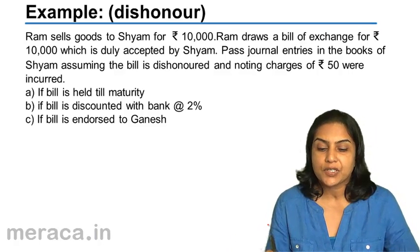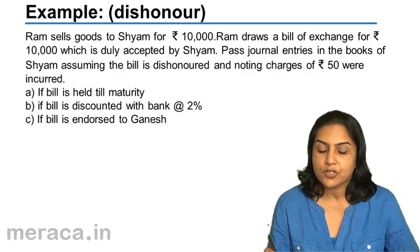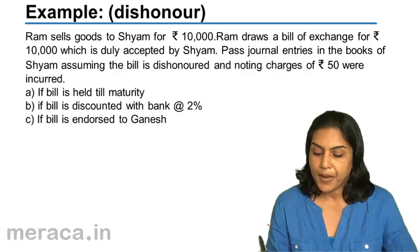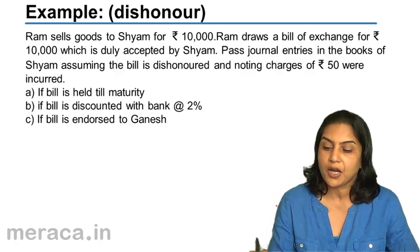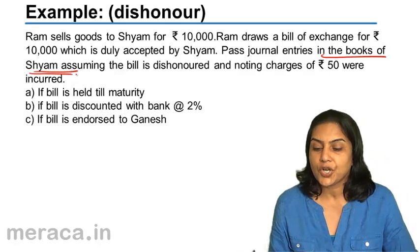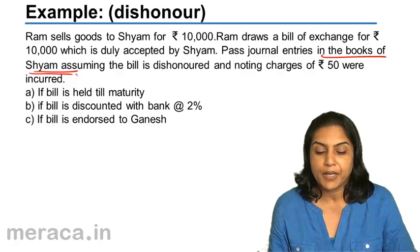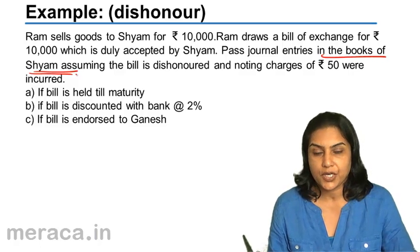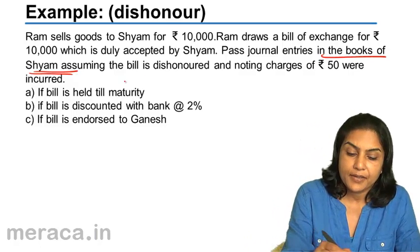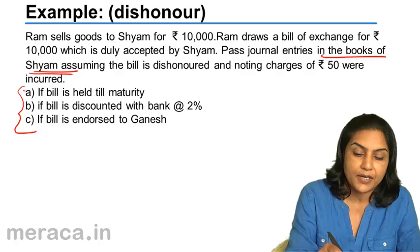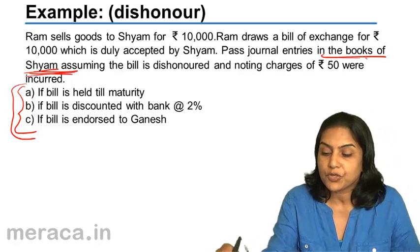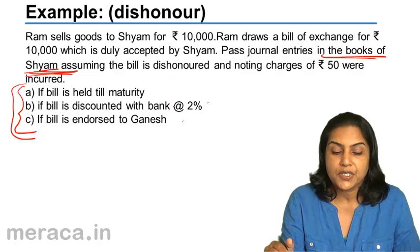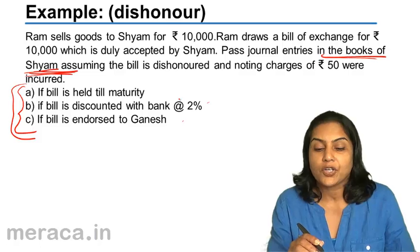Let us pass certain journal entries. Bills payable dishonored: Ram sells goods to Shyam for Rs. 10,000. Ram draws a bill of exchange for Rs. 10,000 duly accepted by Shyam. Pass journal entries in the books of Shyam, assuming the bill is dishonored and noting charges of Rs. 50 were incurred — A: the bill is held till maturity, B: it is discounted with the bank at 2%, and C: the bill is endorsed to Ganesh. The A, B, C does not make a difference when passing entries in the books of Shyam; the entries would be the same in all three cases. The difference in accounting entries is only in the books of Ram, not in the books of Shyam.